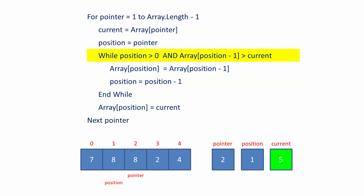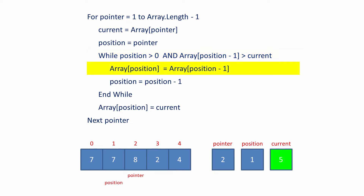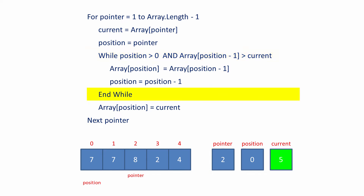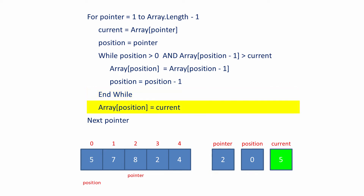A test is made to see if the inner loop should continue. The value of position is still bigger than zero, and the value in the array given by position minus 1, namely the value 7, is bigger than current, so the loop can execute again. The value at position minus 1 in the array is copied to position — the 7 overwrites the 8. 1 is subtracted from position, but this time the value of position has fallen to zero, so the inner loop comes to an end.